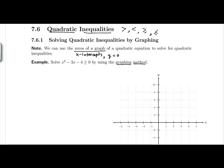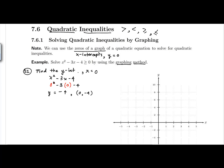In order to solve this inequality using the zeros of the graph, we should find the zeros, the vertex, and the y-intercept — enough ordered pairs to graph the quadratic. Let's find the y-intercept first, since that is when x is equal to zero. For x squared minus 3x minus 4, plugging in x equals zero gives 0 squared minus 3 times 0 minus 4, which equals negative 4. So the ordered pair is (0, -4).